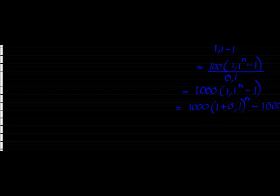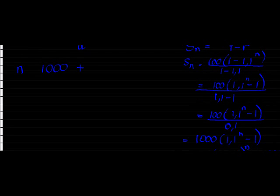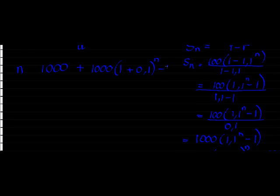So if I go back to this, I get 1000 plus 1,000 times 1 plus 0.1 to the power of N minus 1,000. So that after N years, this and that cancels, I'll have 1000 times 1 plus 0.1 to the power of N.